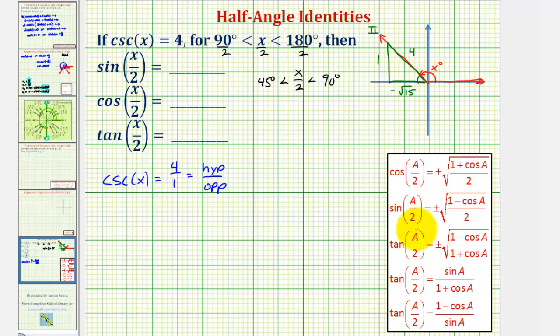Now using the half angle identity for sine a divided by two, or in our case sine x divided by two, we would have, we know it's going to be positive, we'd have one minus cosine, in our case x, divided by two.